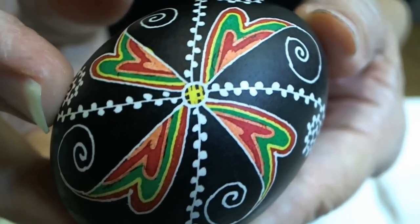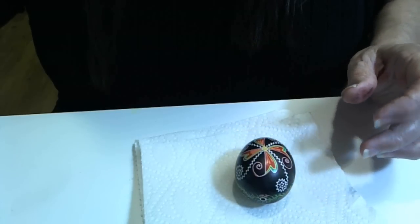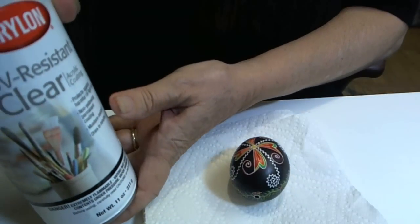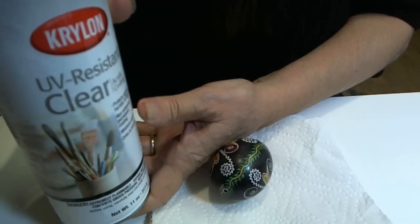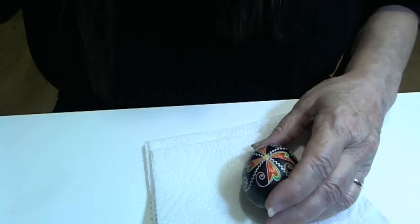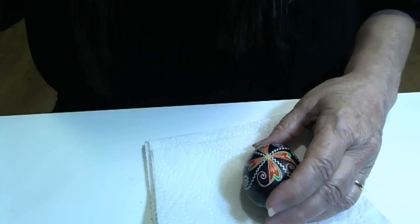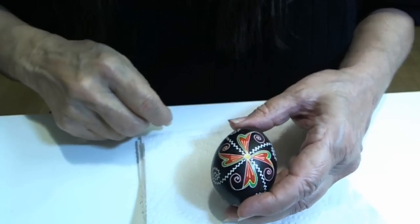Our next step will be to varnish the egg. Many artists, before they put varnish on the egg, they may spray their egg with this type of spray. It helps keep the dyes from fading. It doesn't matter what brand name varnish you use. The most important thing is that it's oil base. The water base varnish will just remove all of your artwork.